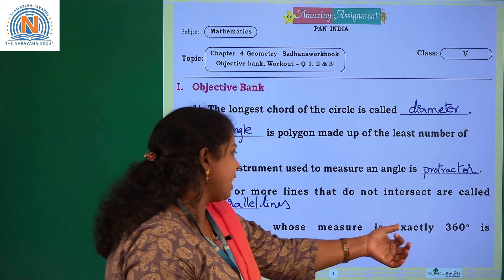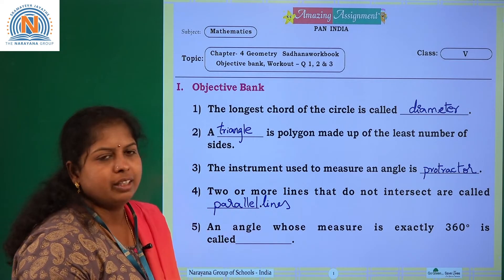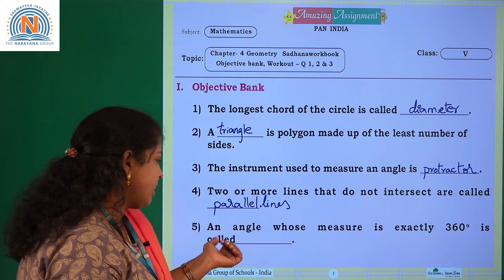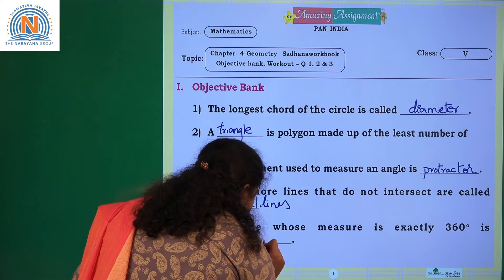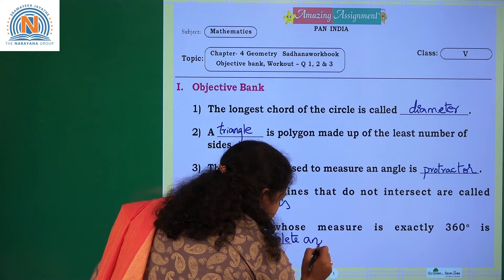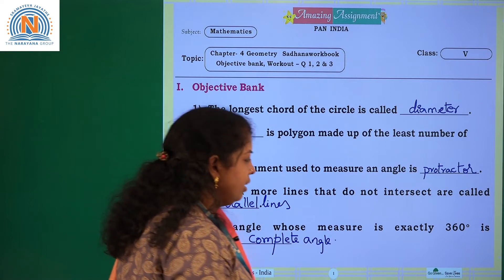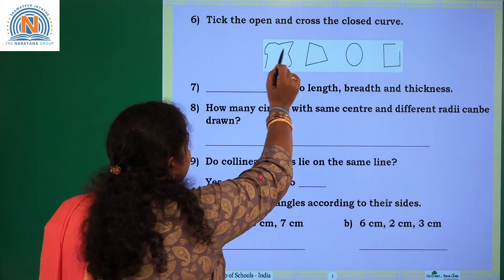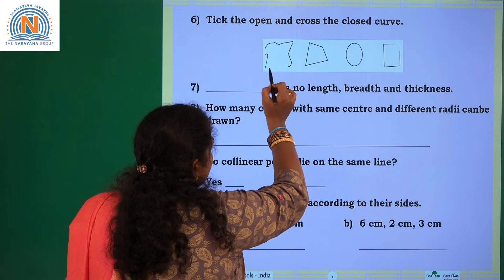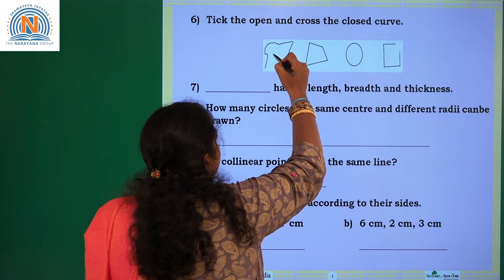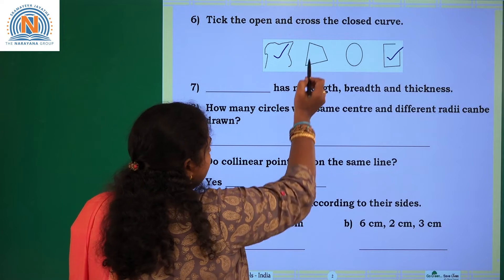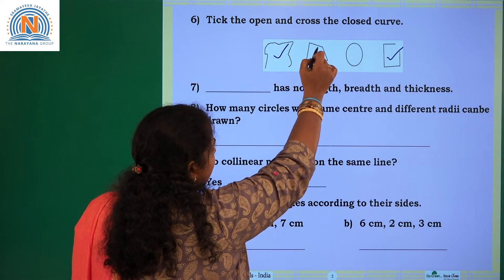An angle whose measure is exactly 360 degrees is called a complete angle. What do you call this angle? A complete angle. Entirely closed with four sides — this refers to a closed figure.